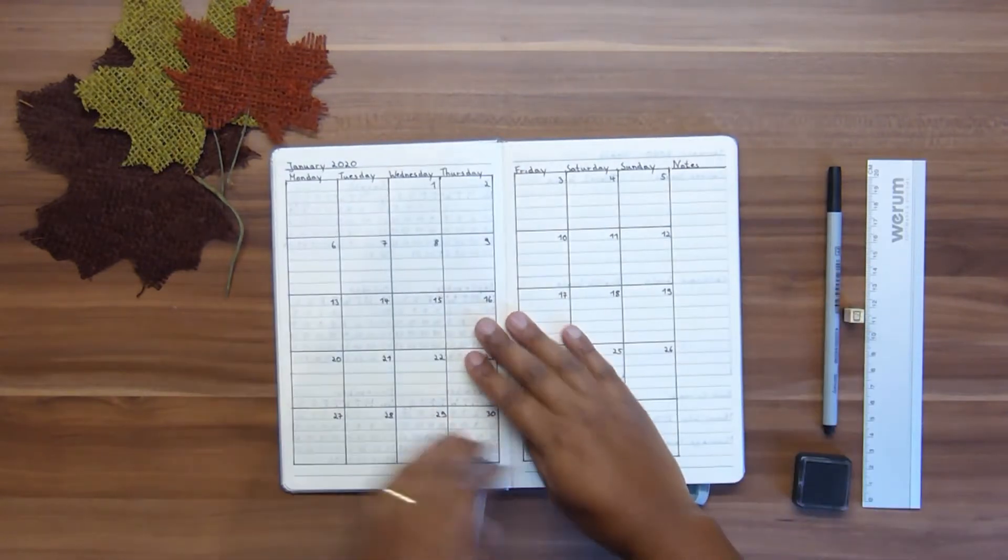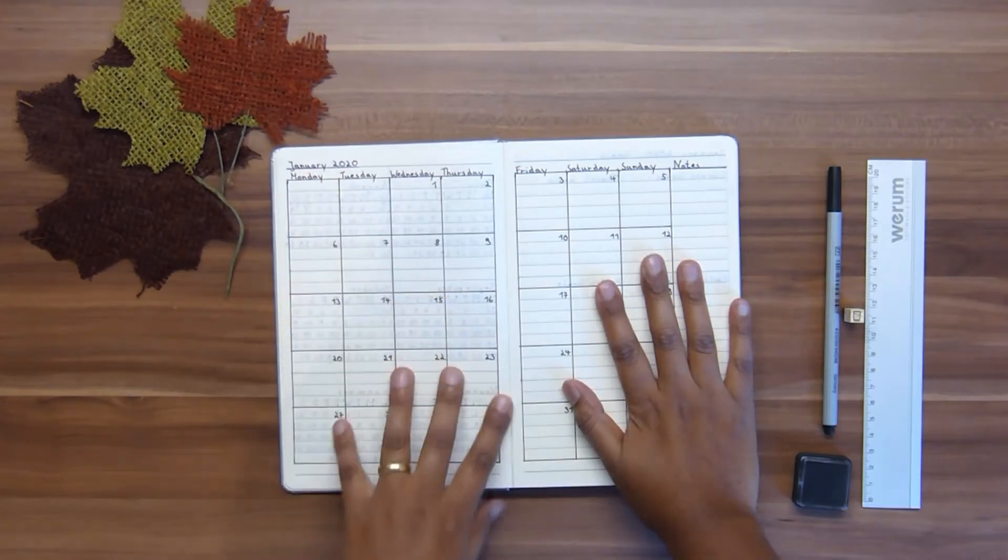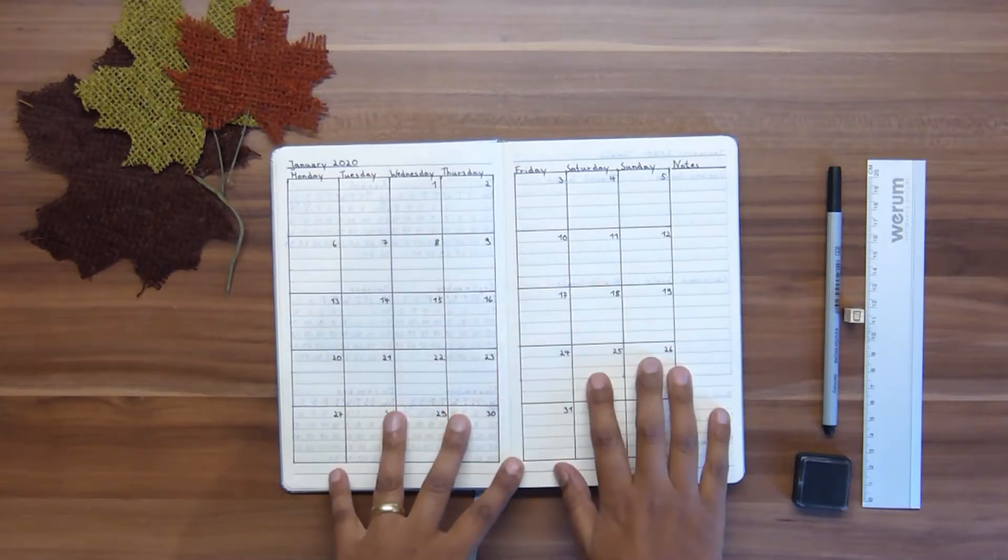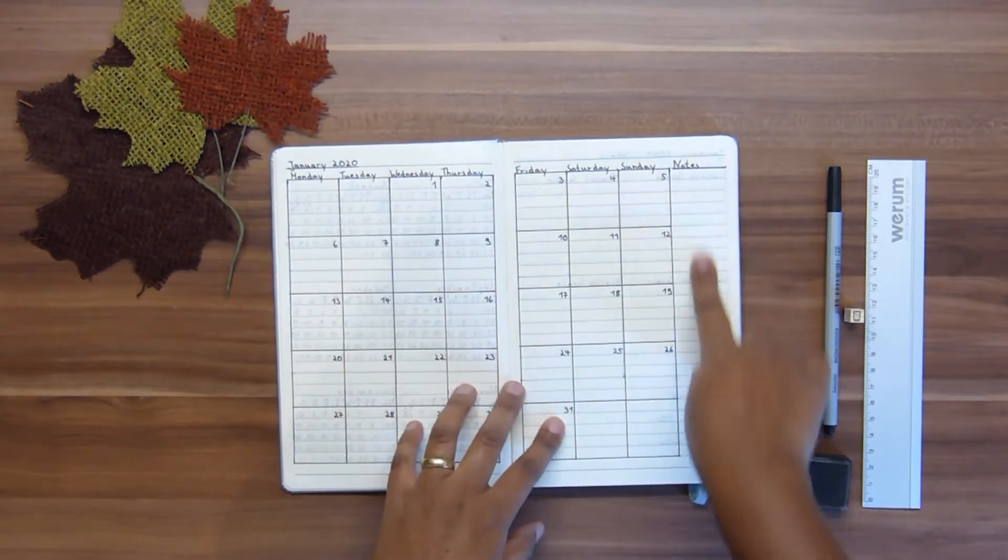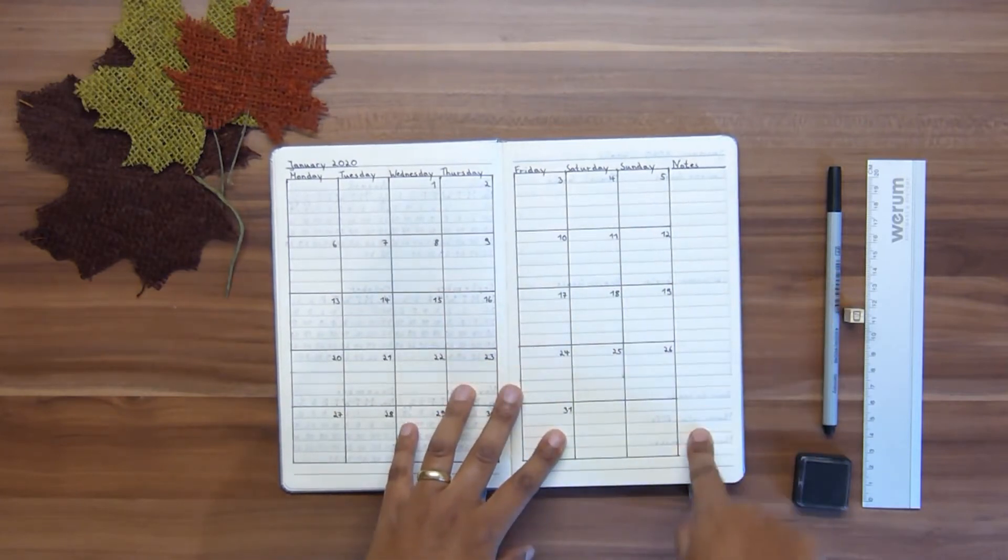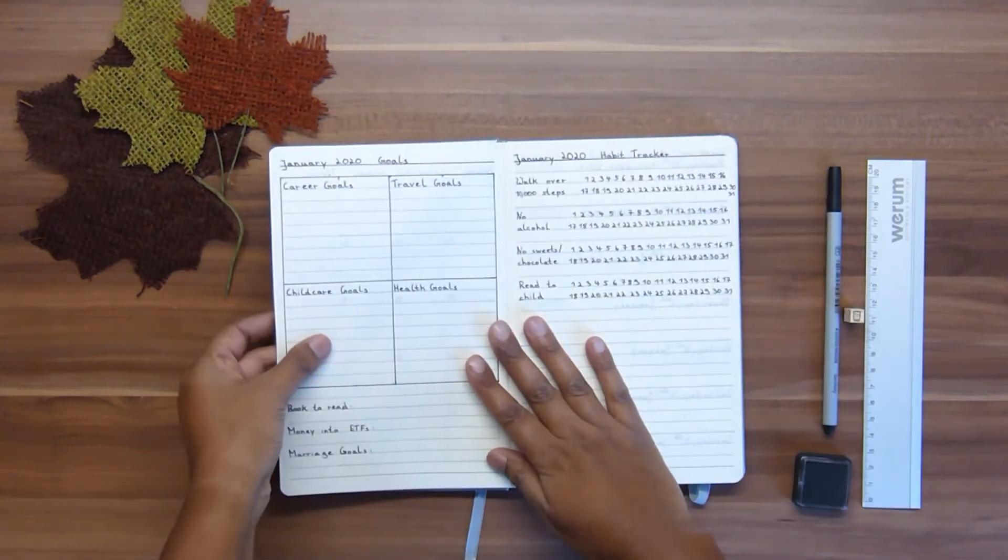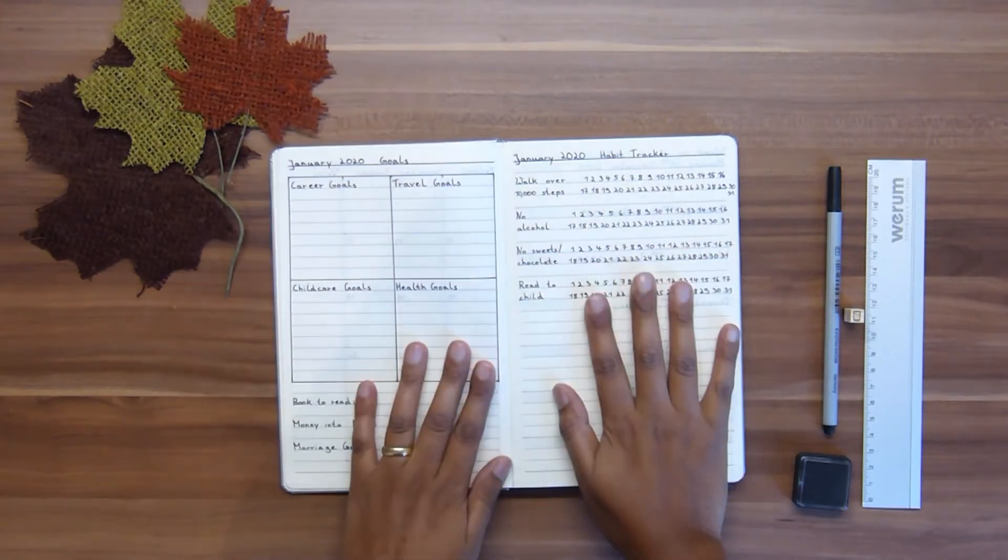Then I have two full pages for the monthly overview. So this is January 2020. Here I will put in birthdays, events, and very important deadlines. And I have some space here for notes. So then I have another two pages for each month - this is the same for each month.